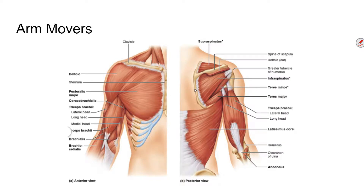For arm movers, we're going to talk about seven muscles. The purpose of these muscles is to move the upper arm, possibly independent of the shoulder. They insert on and move the humerus. Some originate on the scapula, some on other parts of the axial skeleton. They are used for flexing, extending, and adducting.